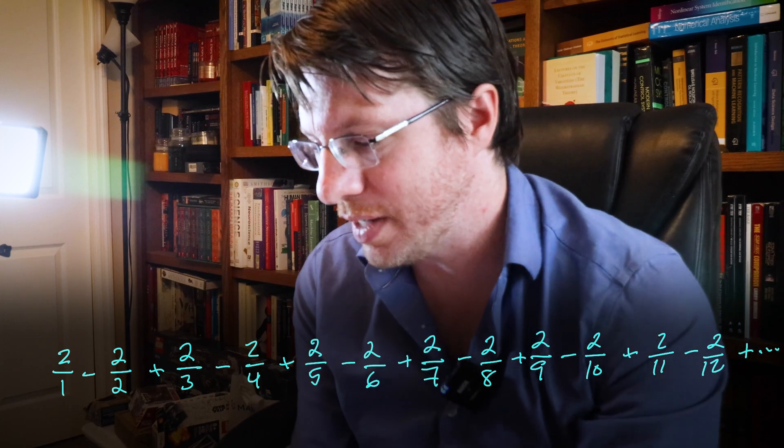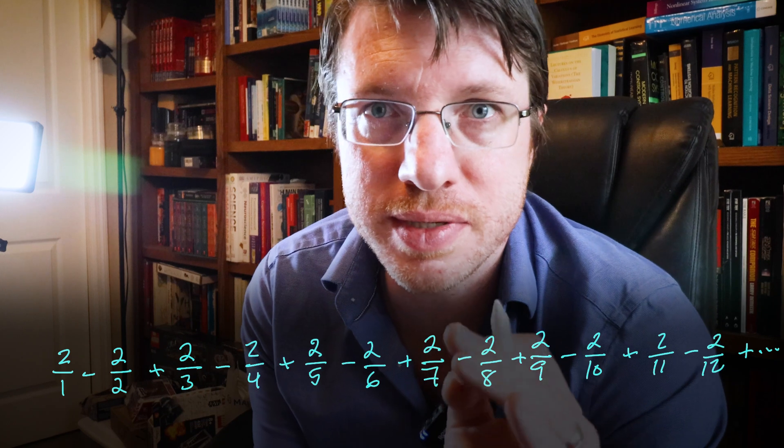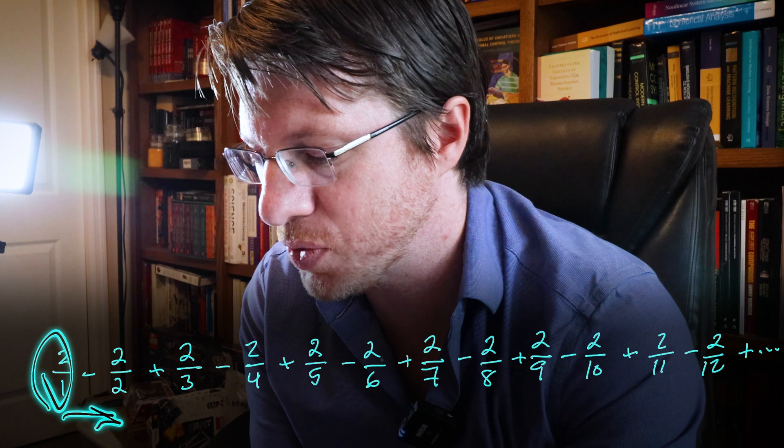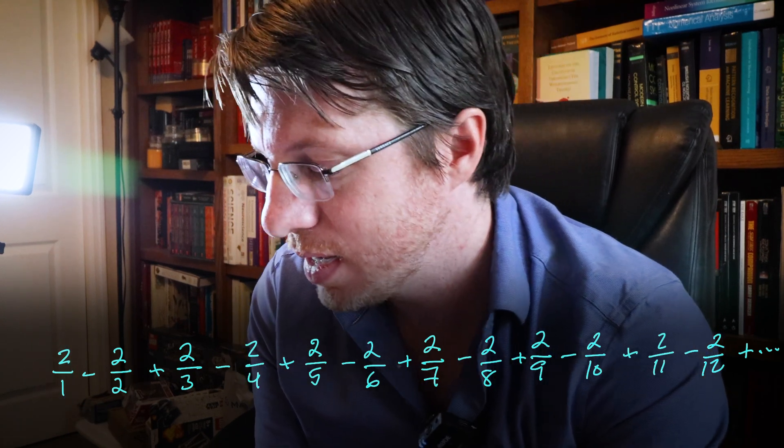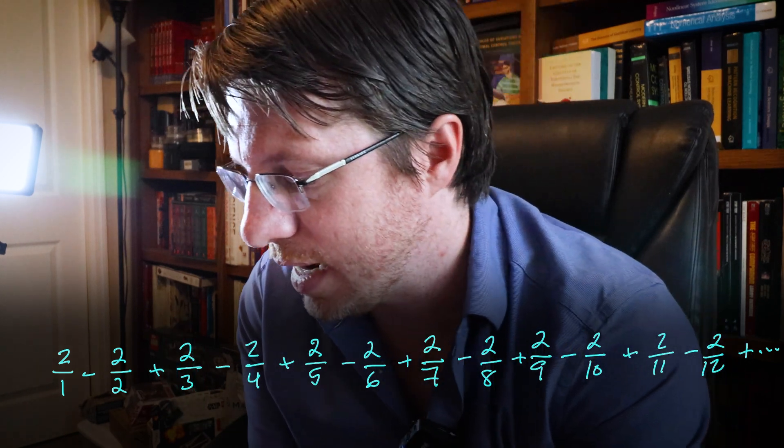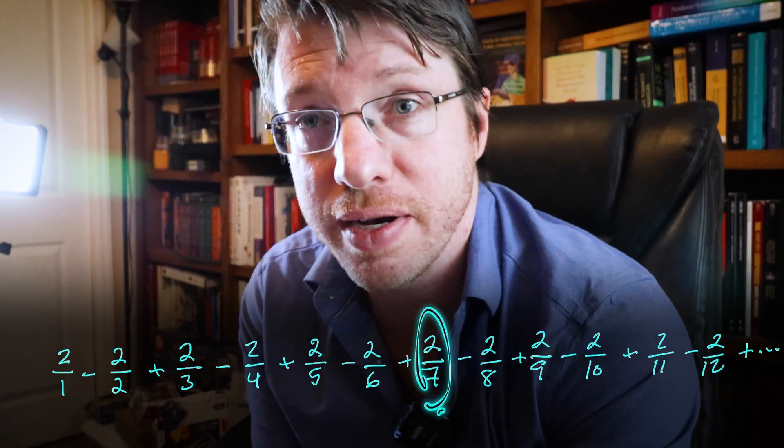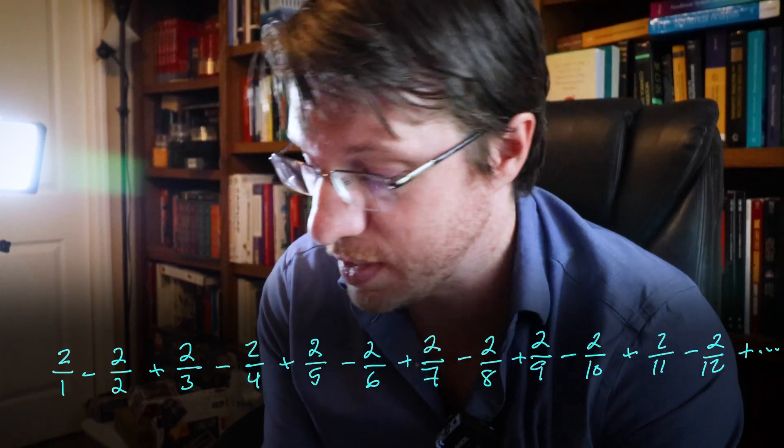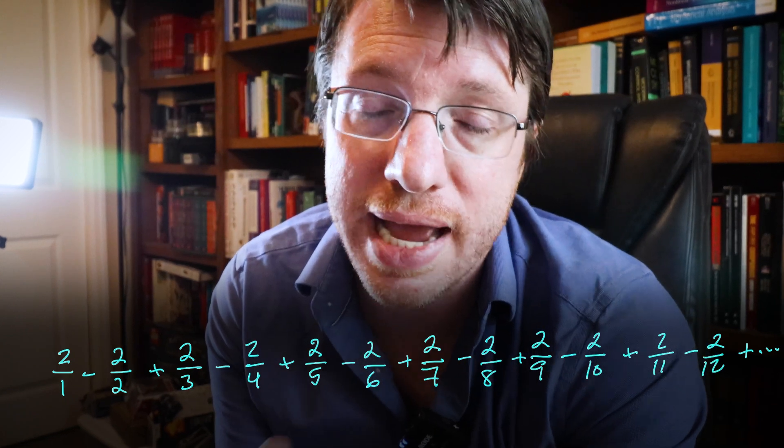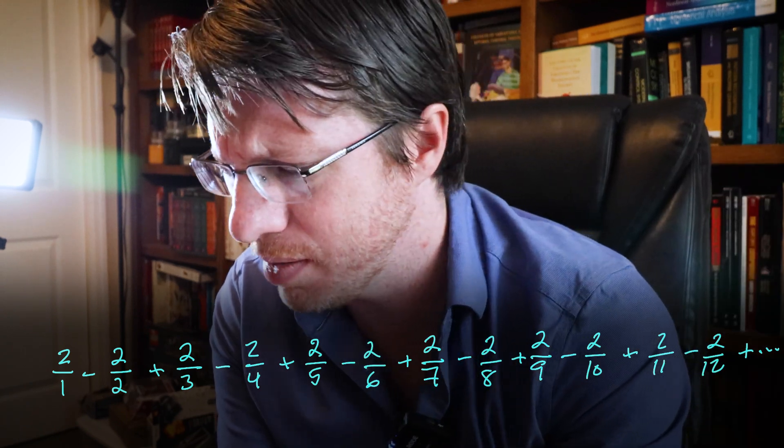So you get 2 over 1 minus 2 over 2 plus 2 over 3 minus 2 over 4, et cetera. And we know that should give us twice the natural log of 2. Now what he did is he took a look at the denominators. Anytime there's an odd denominator, he moved them next to twice that denominator.